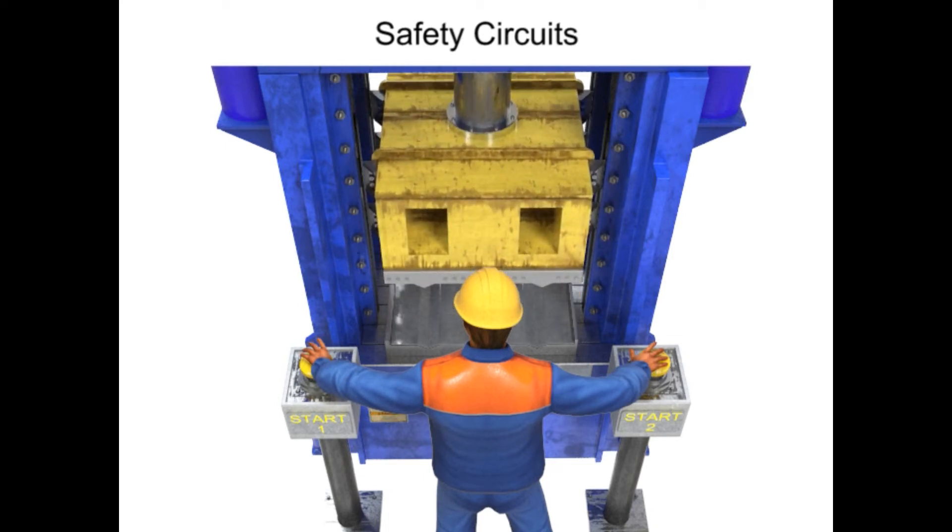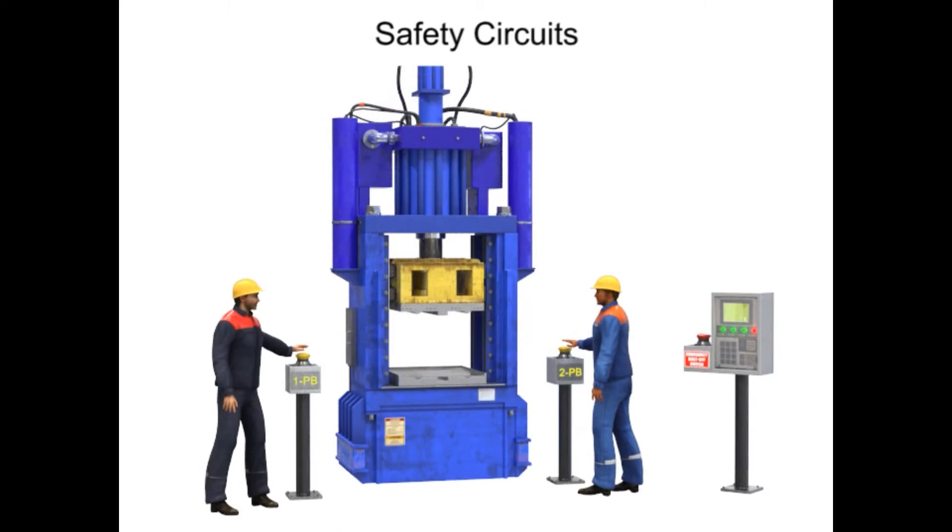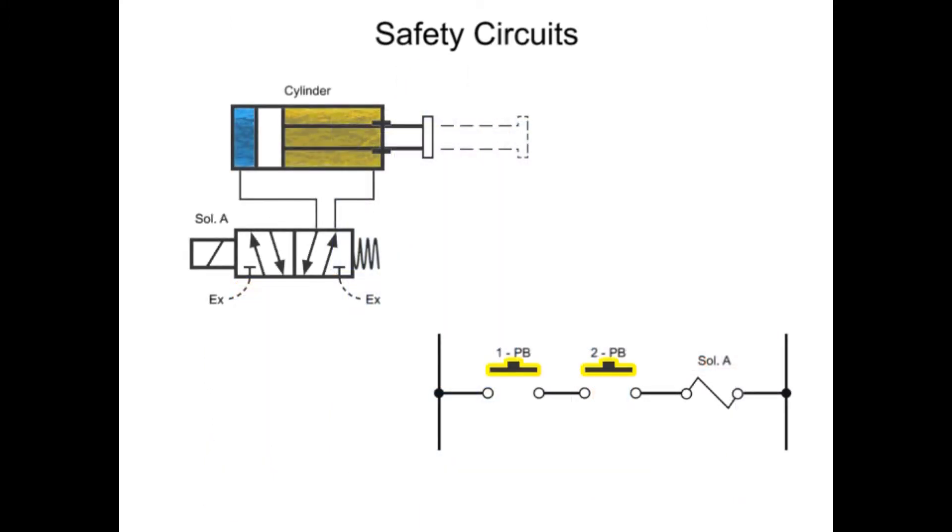Two-hand controls can also describe a machine that requires two separate operators typically located on opposite sides of the machine. Both operators must be in place to allow the machine to start its cycle. For this type of machine, two-hand operation controls typically consist of two push buttons wired in series.